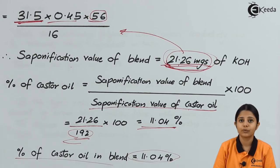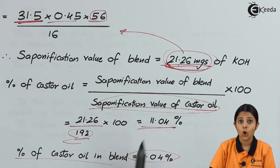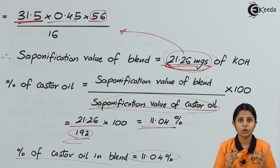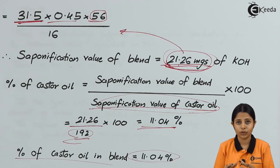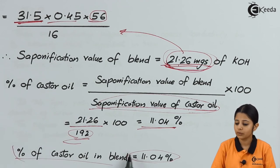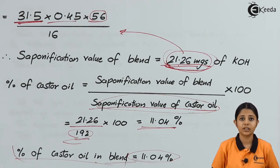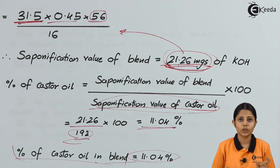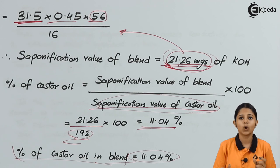For problems of percentage of castor oil, we finally find the percentage using the saponification value. Either the saponification value will already be given in the question, or the normality will be given. Whichever is not given, we find it first. In this question, the normality was not given, so we first found the normality of KOH, then calculated the saponification value, and finally arrived at the percentage of castor oil in the blend.